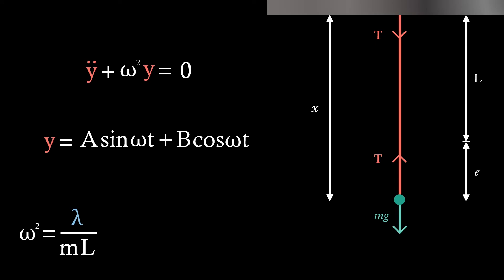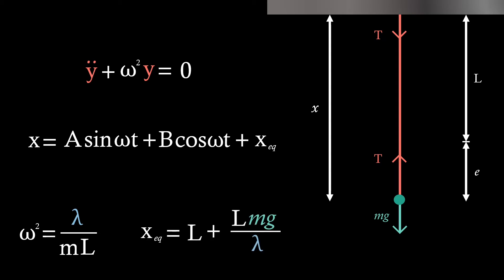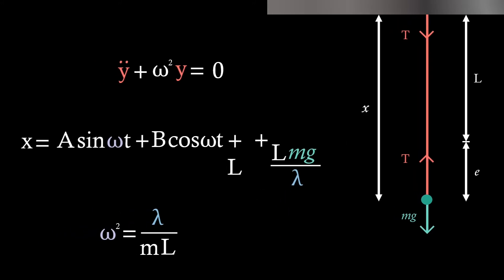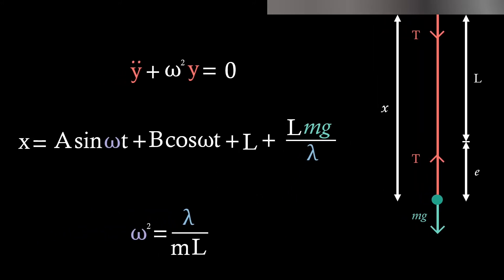The general solution to an ODE like this is y equals a sin omega t plus b cos omega t. Now that we've got the general solution to simple harmonic motion, what we can do is return to our x displacement variable by substituting y for the original value. After rearranging to have x on one side, we can substitute our xEQ value back in, which we found earlier. After performing the substitution, we see that we've got an expression for x in terms of time. Therefore, we know how the displacement will change as time varies.